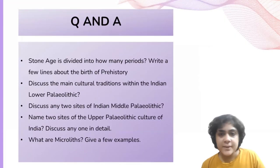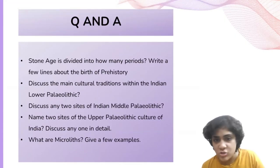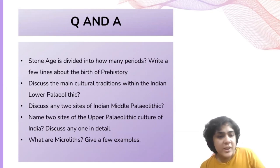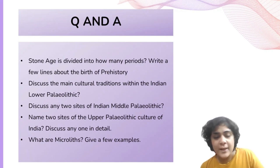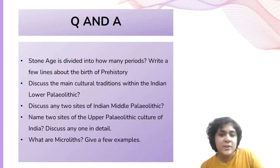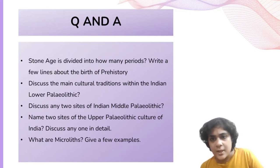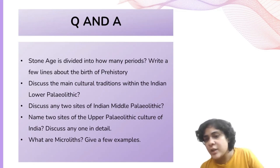In this section of the video we'll be discussing the questions and answers mentioned in this unit. The first question is: how many periods is the Stone Age divided into, and write a few lines about the birth of prehistory? As discussed earlier, the Stone Age is divided into the Old Stone Age (Paleolithic), Middle Stone Age (Mesolithic), and New Stone Age (Neolithic). In 1859, the discovery of primitive tools and extinct animal fossils in northern Europe, presented before the Royal Society, marked the birth of prehistory.